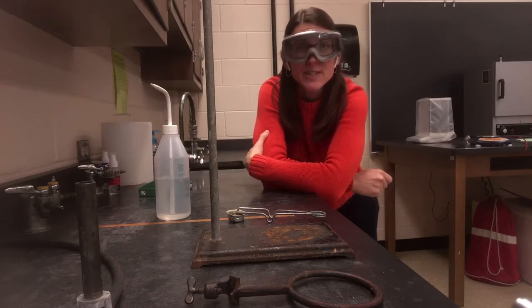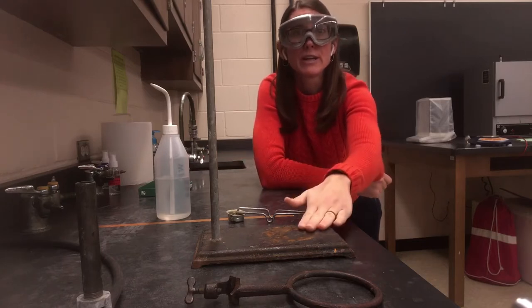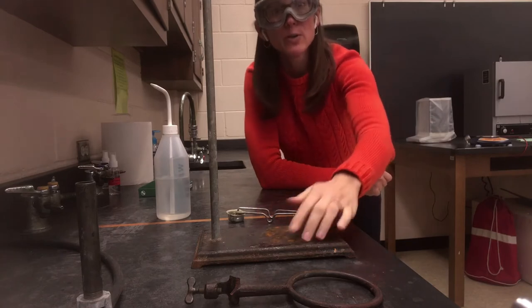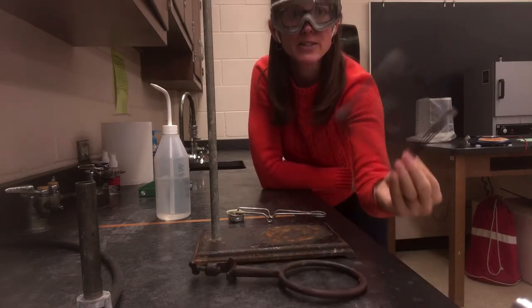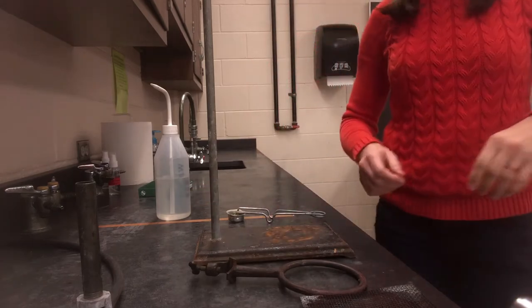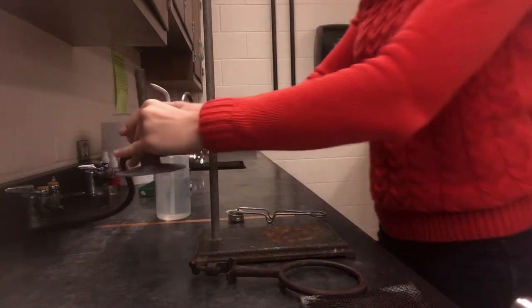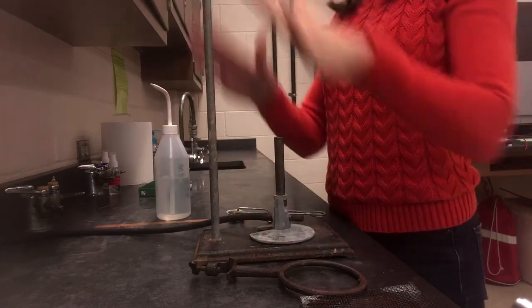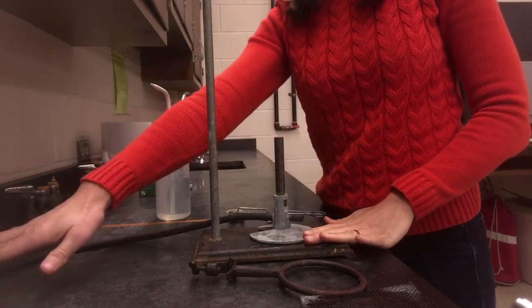The process for setting this up will require a ring stand (that's the big metal post), a metal ring, a piece of wire mesh, and then your Bunsen burner. So what you're going to do is take your Bunsen burner and place it on your ring stand. You want to make sure it's still going to be able to reach the gas jet.